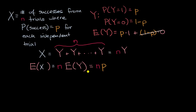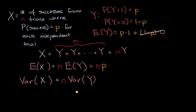Now we're going to do the same idea to figure out what the variance of x is going to be equal to. We know from our variance properties — you can't do this with standard deviation, but you can do it with variance — the variance of x is similarly going to be the sum of the variances of these n y's, so it's n times the variance of y. This all boils down to: what is the variance of y going to be equal to?